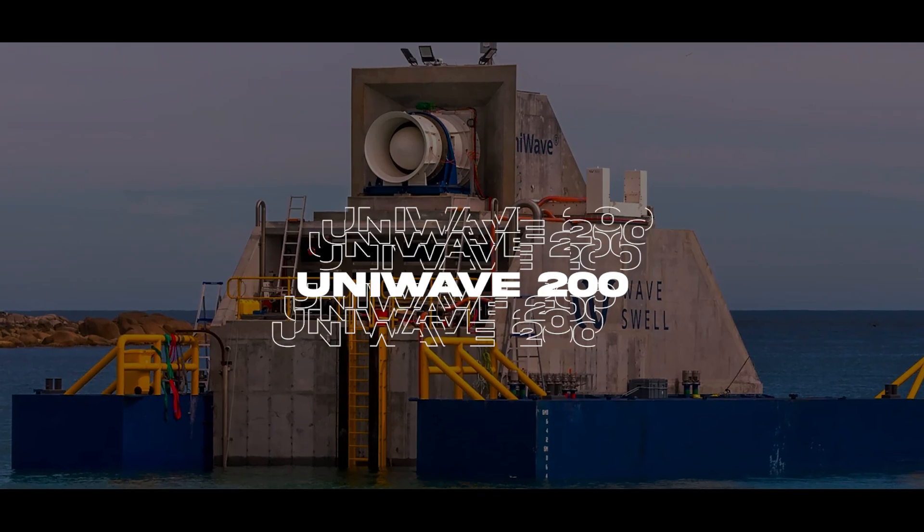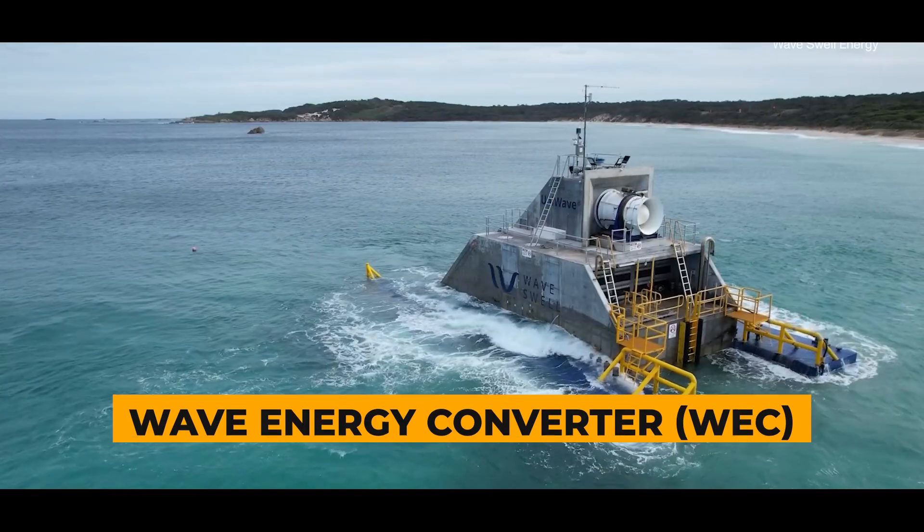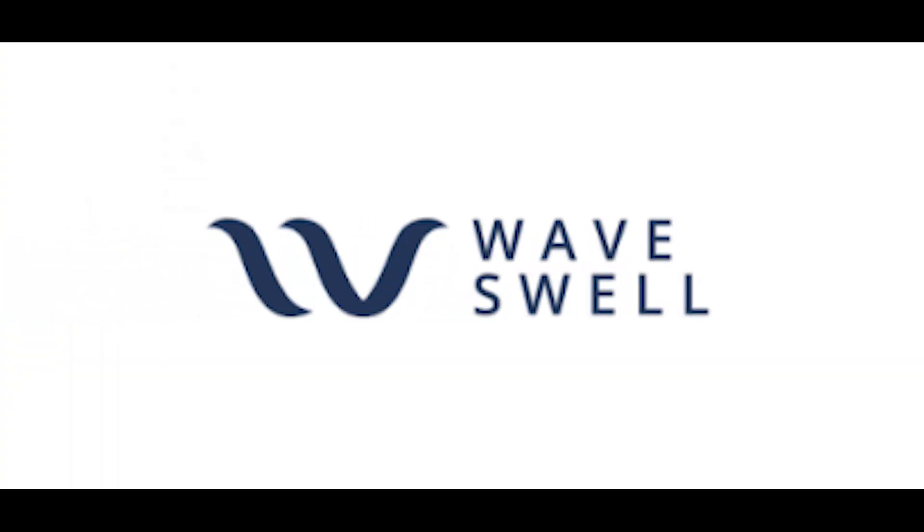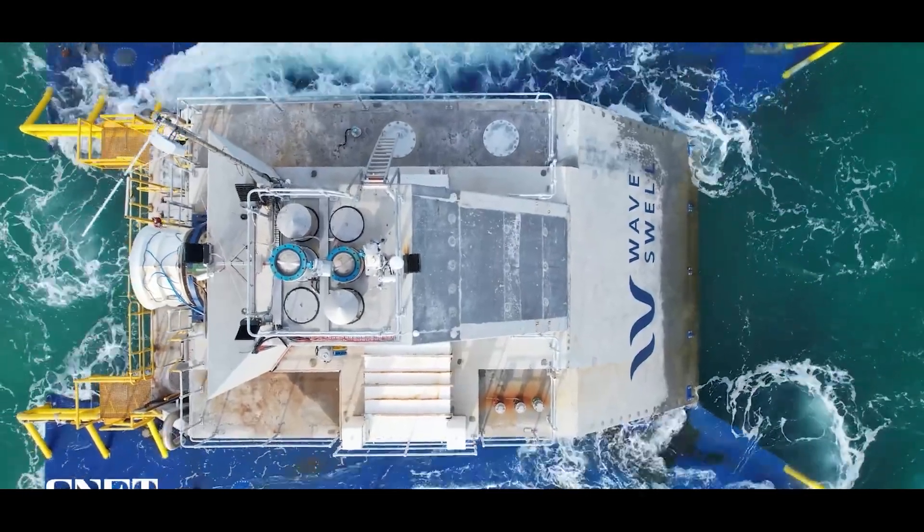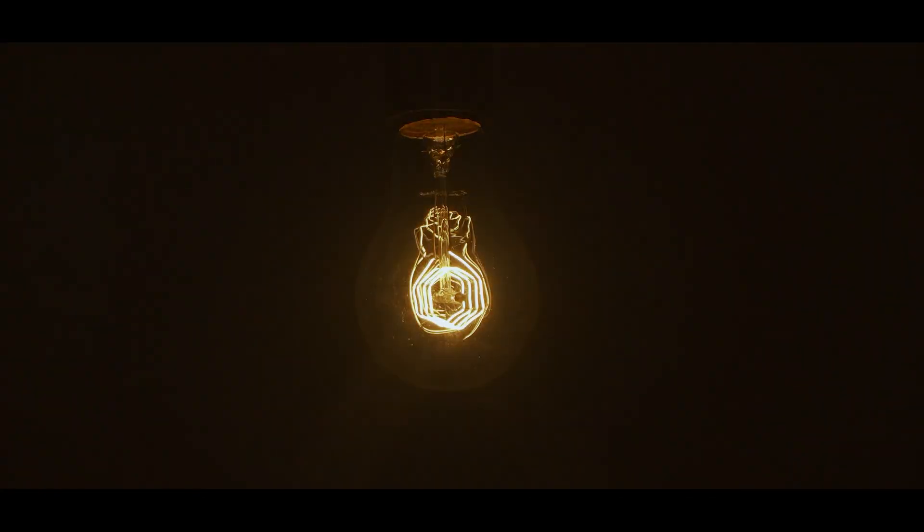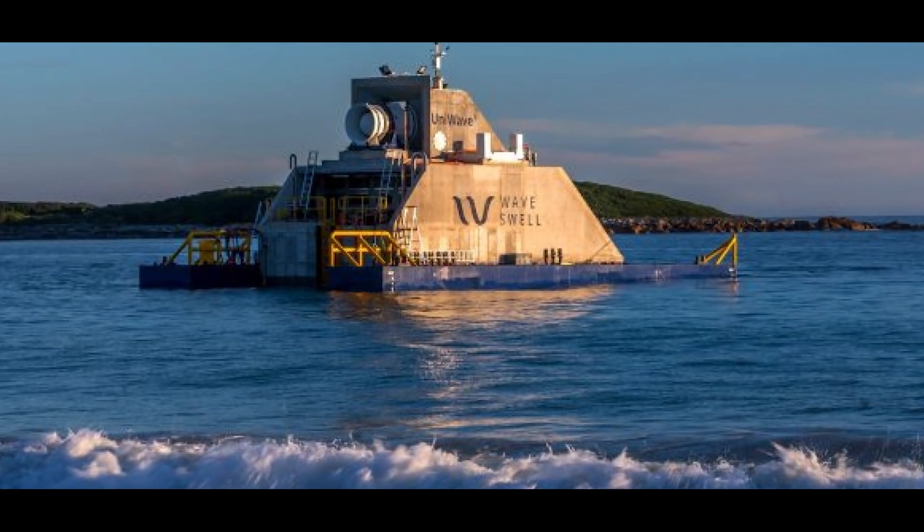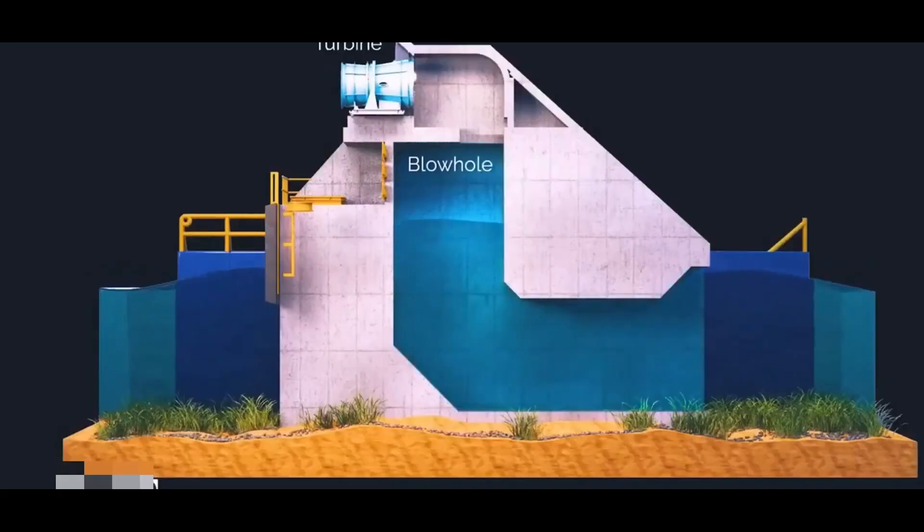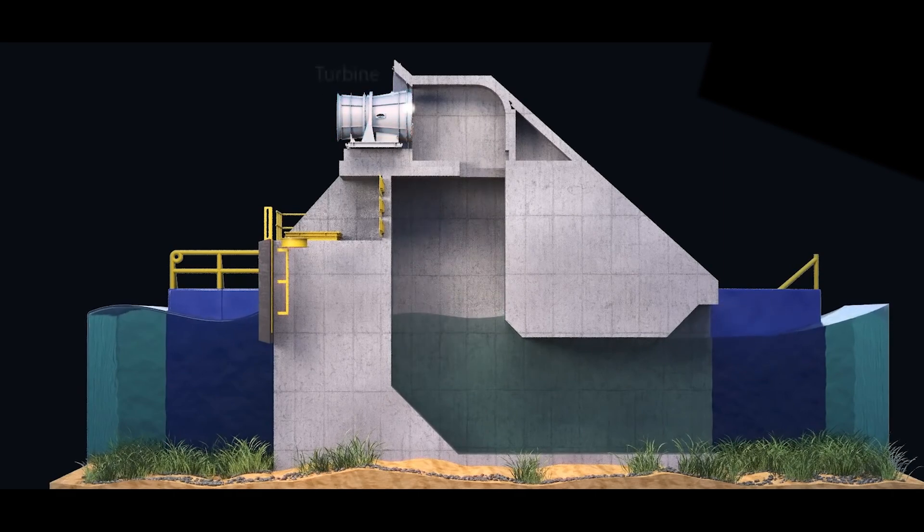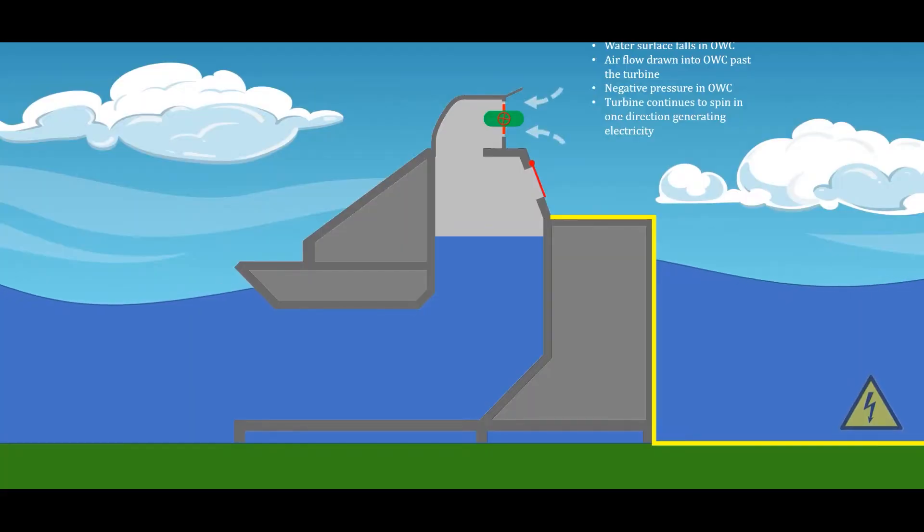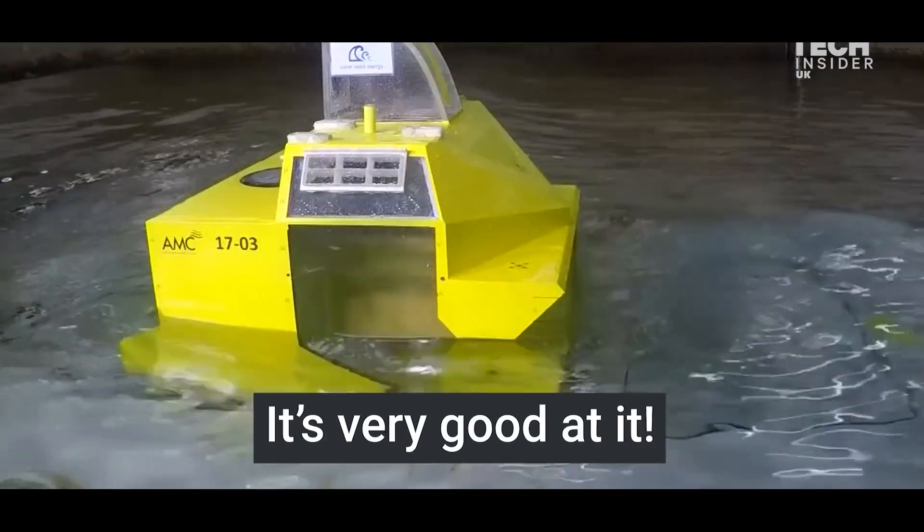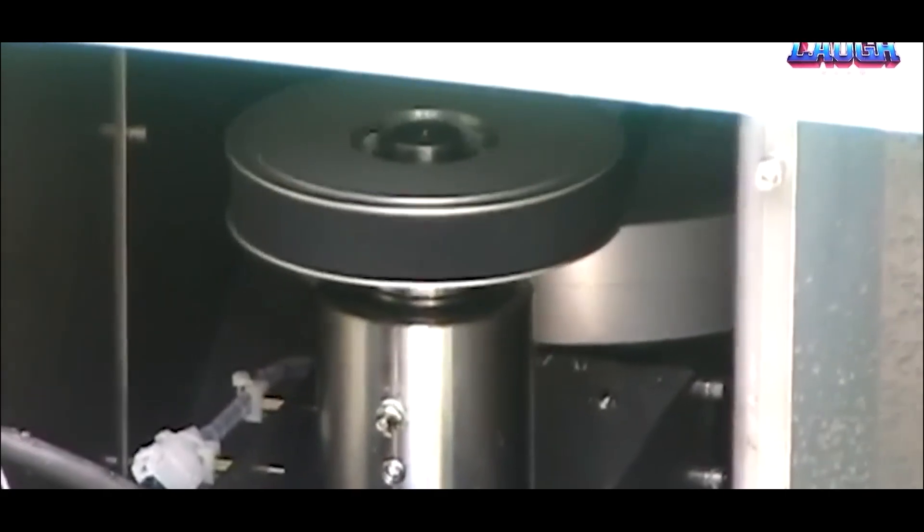UNIWAVE 200. The UNIWAVE 200 is a wave energy converter, WEC, developed by the Australian company WaveSwell Energy. It's a truly innovative and exciting technology that harnesses the power of ocean waves to generate clean, renewable electricity. The UNIWAVE 200 features a large, hollow concrete chamber at its base. As waves roll in, they force water and air into the chamber, compressing the air inside. This pressurized air then escapes through a specially designed outlet valve, driving a turbine and generating electricity.